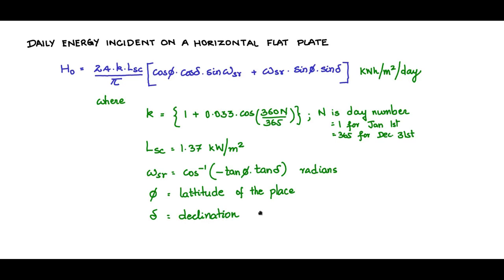Now let us summarize the daily energy incident on a horizontal flat plate. H₀ is the daily incident energy and is given by 24K Lsc/π times [cos φ cos δ sin ωsr plus ωsr sin φ sin δ]. This is expressed in kilowatt hours per meter squared per day, where K equals 1 plus 0.033 cos(360n/365).